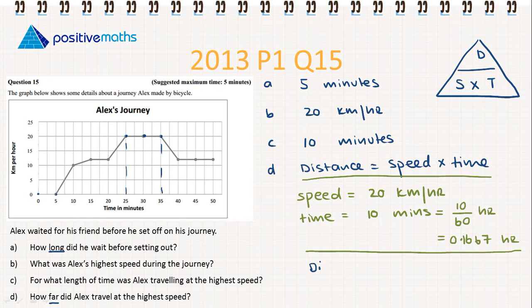Now that we have our units done correctly, we can find our distance. So our distance is going to be 20 multiplied by 0.1667. So our answer is going to be 3.333, and that's recurring. And our distance is kilometers.